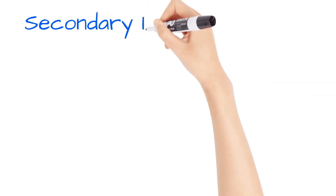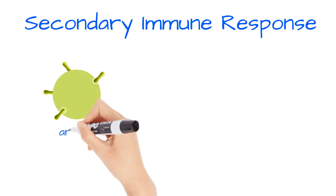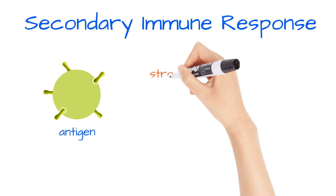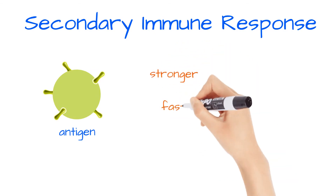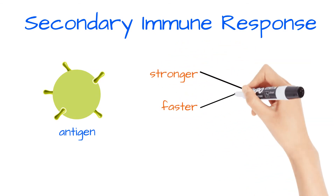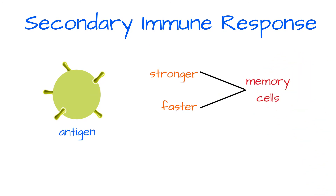With the secondary immune response, the immune system is exposed to the same antigen, but this time it reacts more strongly and quickly. During the primary immune response, memory cells were developed to this antigen, so this enables the immune system to react a lot more quickly.